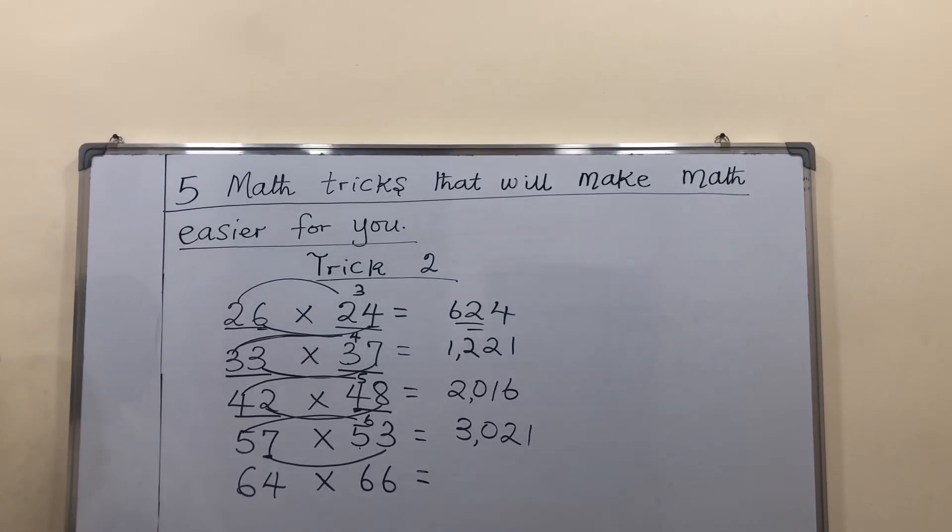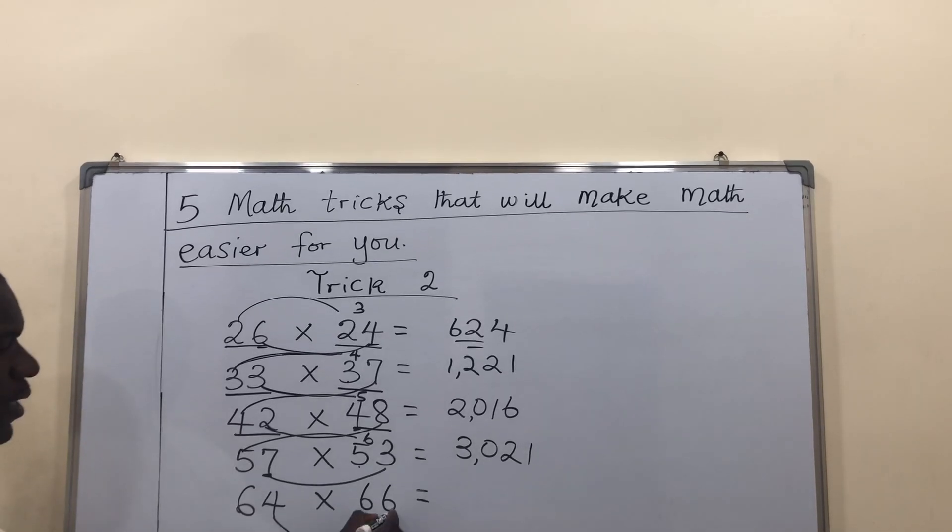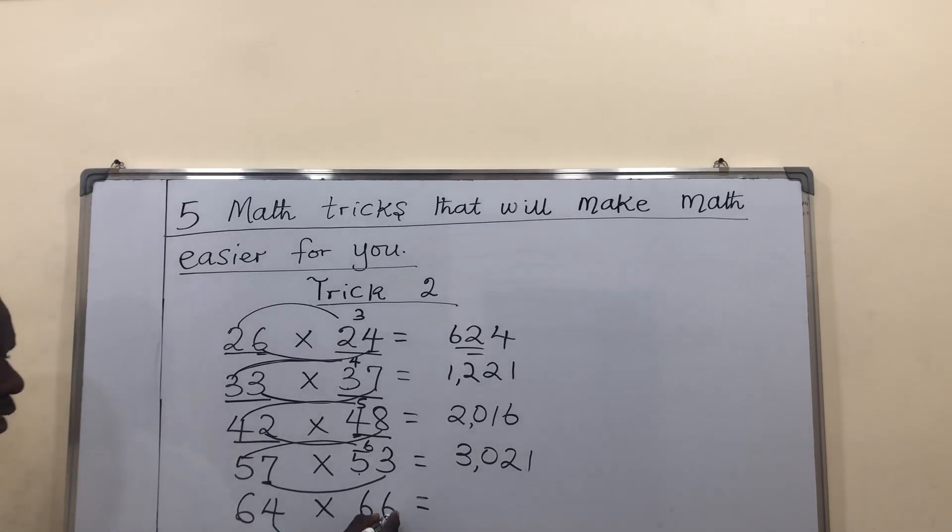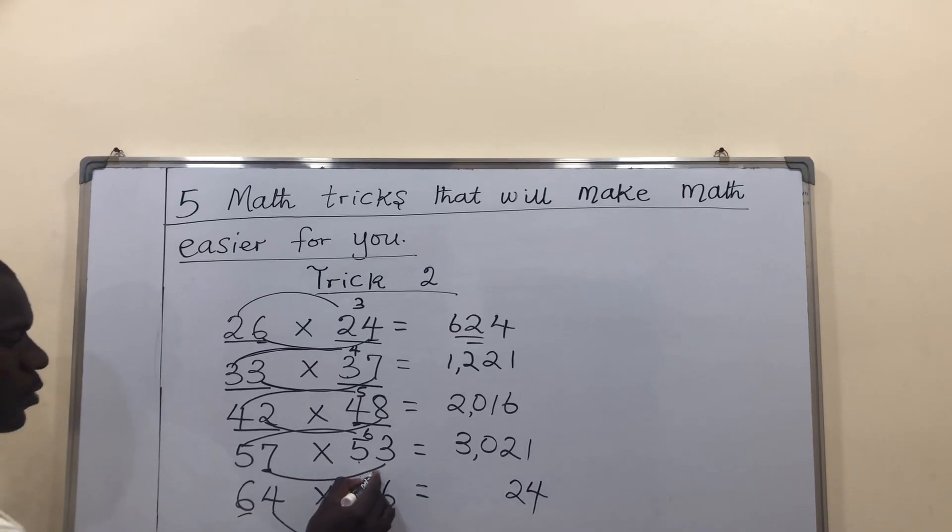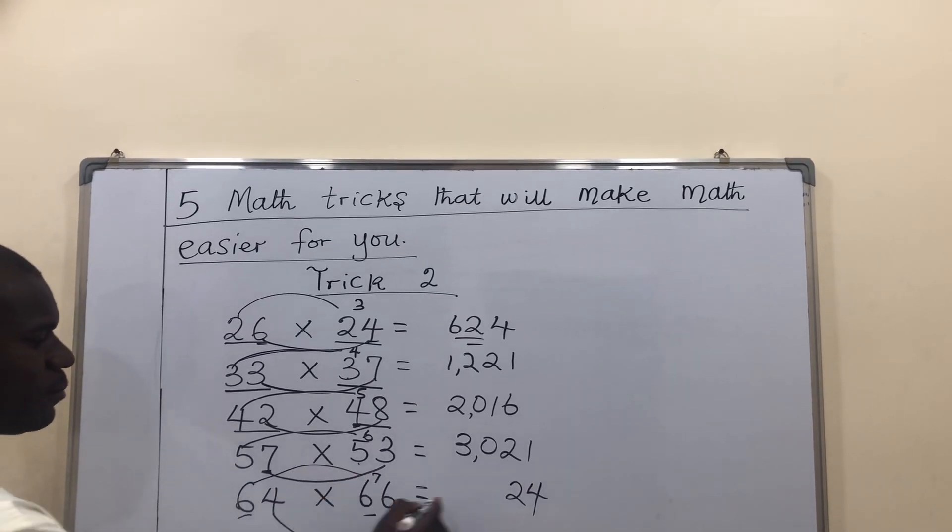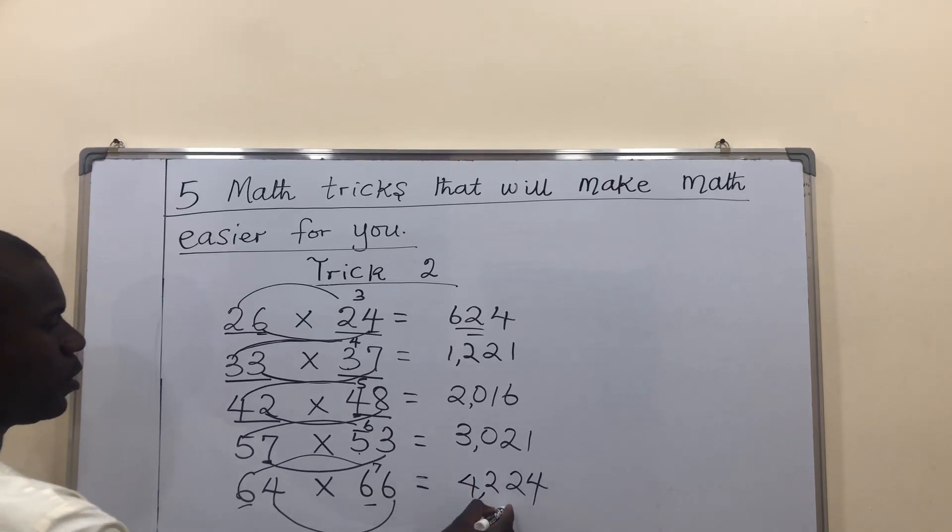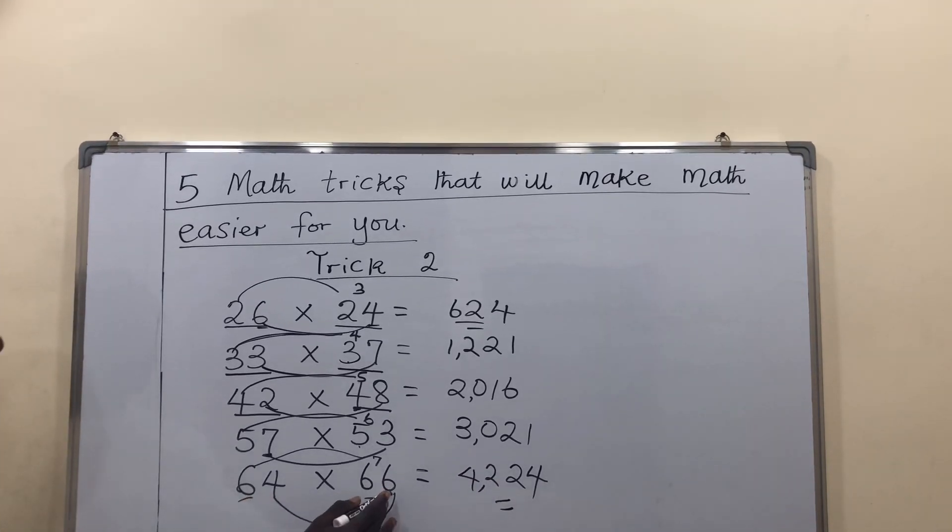For the last question here, 4 times 6, of course, I said always multiply the units together. It will give me 24. Now, to the tens. After 6, what comes next? 6 times 7, 42. So, 64 times 66 is 4,224.